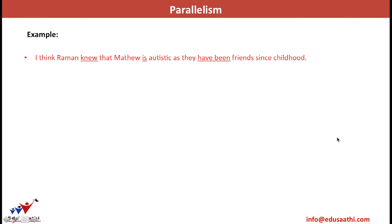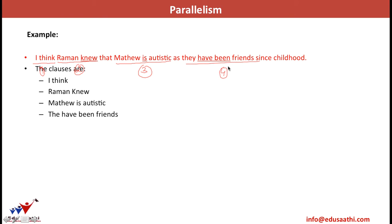Let's have another example: 'I think Raman knew that Matthew is autistic as they have been friends since childhood.' Breaking this sentence into clauses: 'I think' (first clause), 'Raman knew' (second), 'Matthew is autistic' (third), 'they have been friends' (fourth). Closely observing: the first clause is in present tense, the second 'knew' is in past tense, the third is in present tense, and the fourth is also in present tense. Three clauses are in present tense and one is in past.